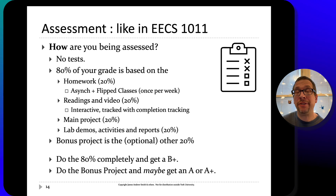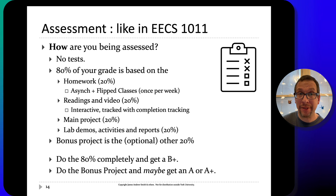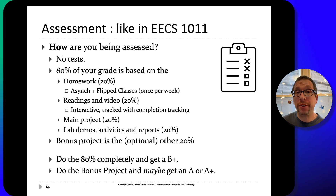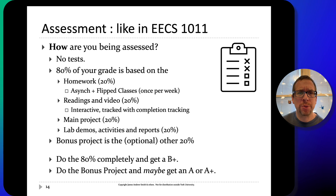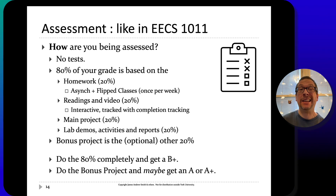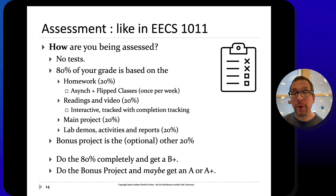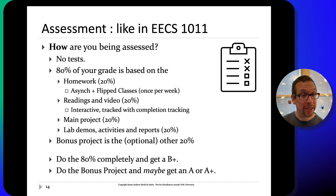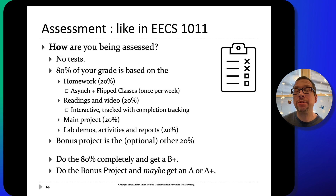In terms of assessment, you will be assessed similarly to EECS 1011. There won't be any tests. 80% of your grade is based on homework, which includes both asynchronous and flipped class work. The readings and video are worth 20%, homework is worth 20%, you have a main project worth 20%, and labs, activities, and reports make up the final 20% of that 80%. There is also a bonus project worth 20% that allows students who engage with it to achieve up to an A or A+. Otherwise, completing just the 80% can earn you up to a B+.